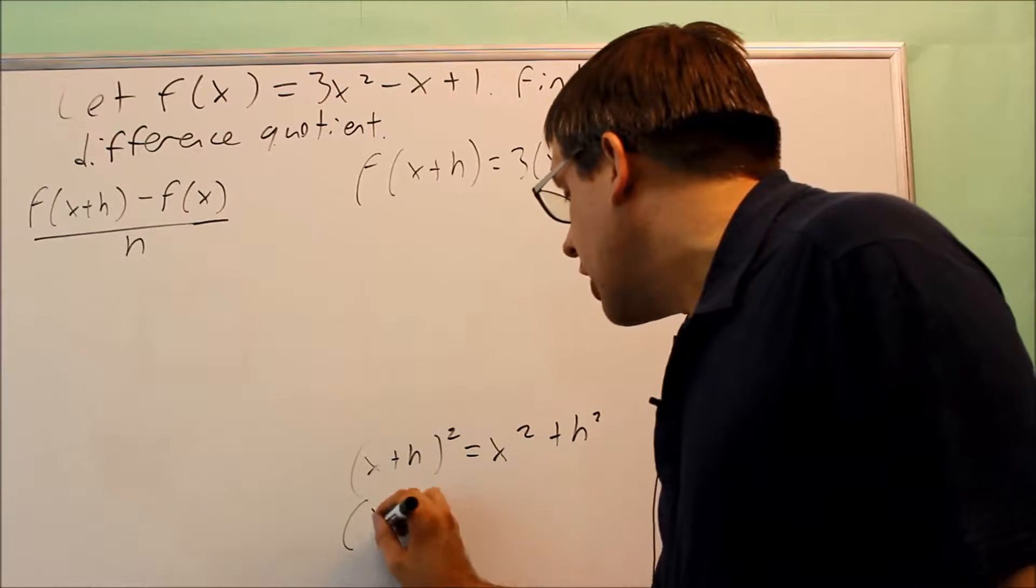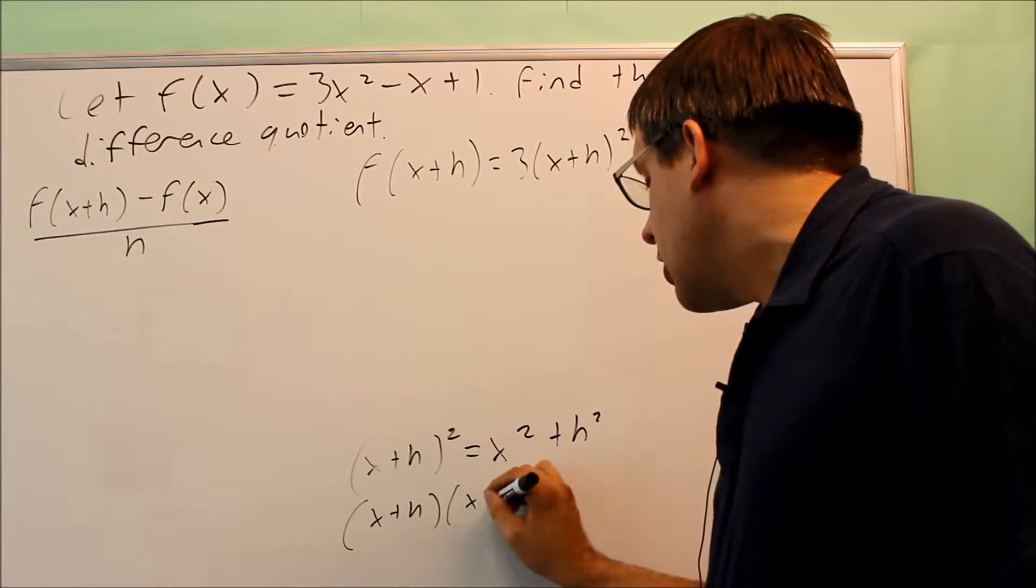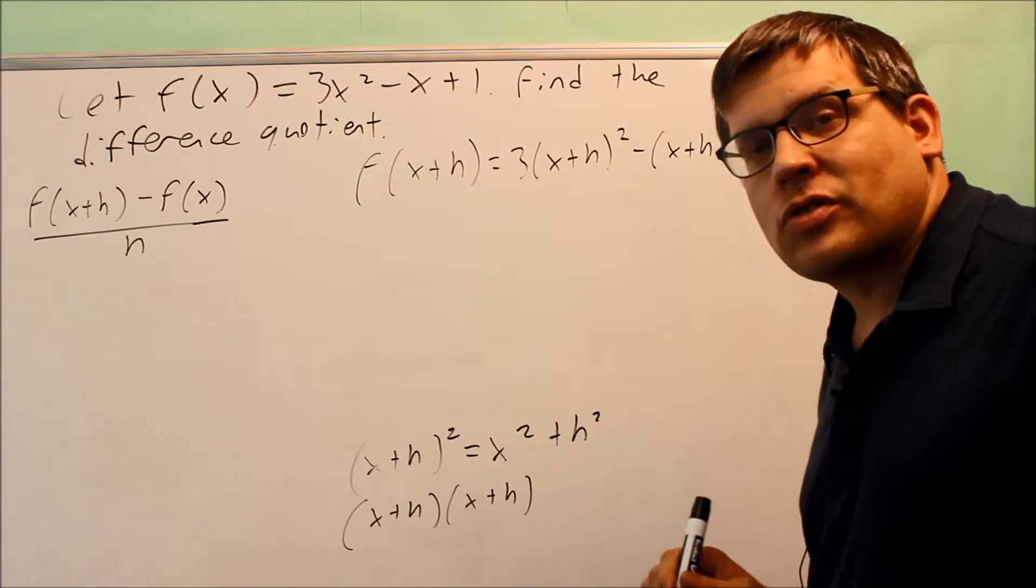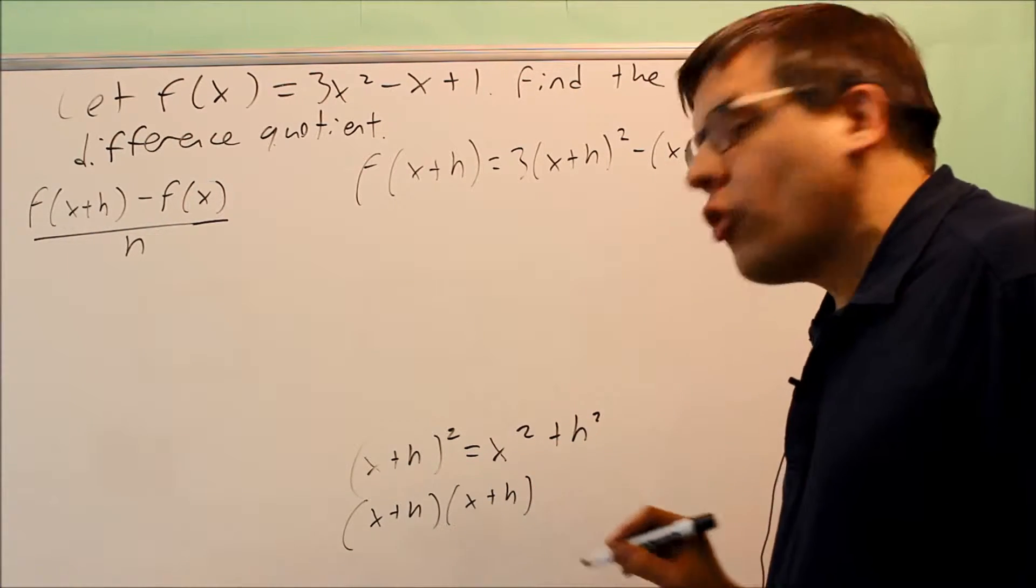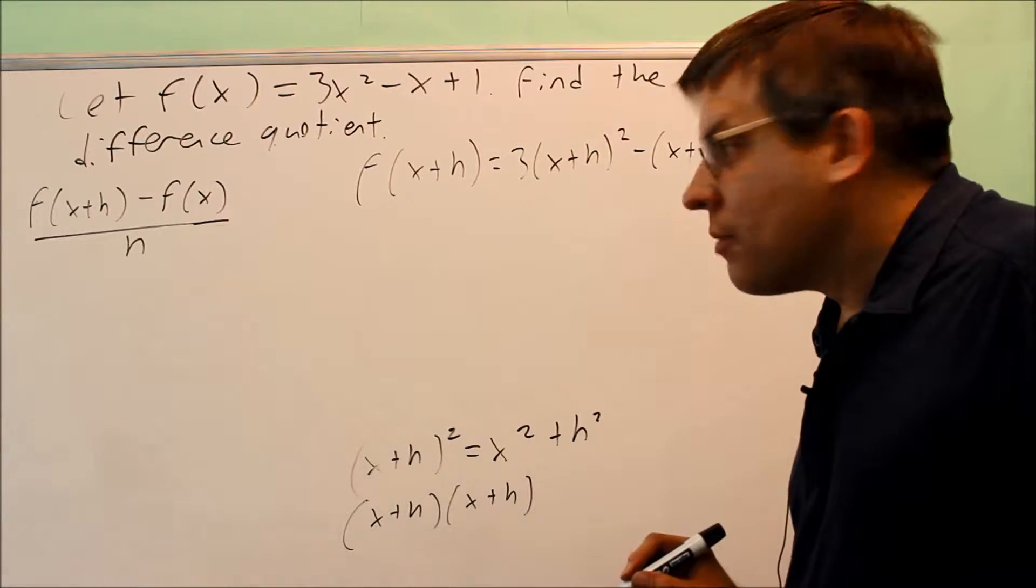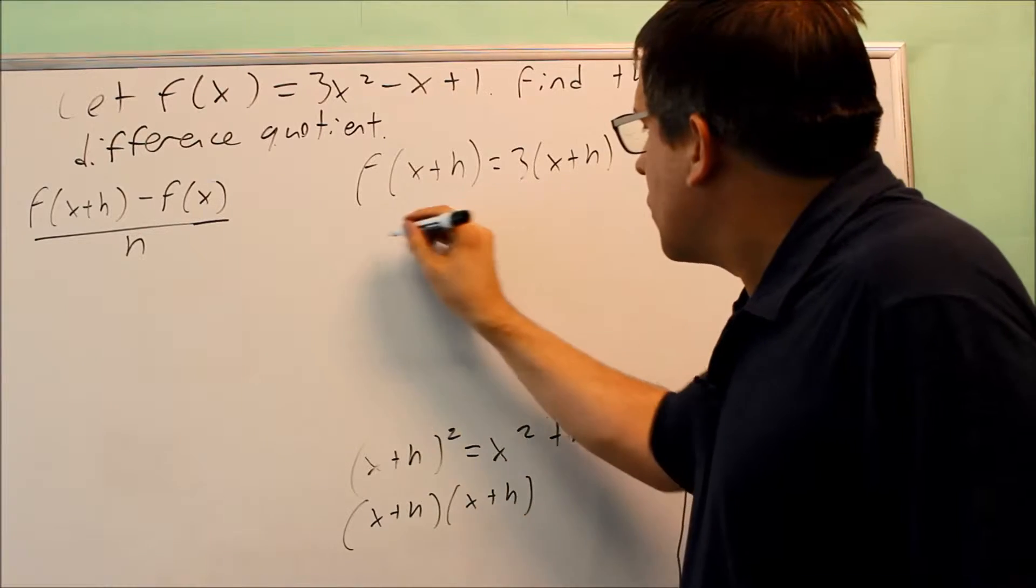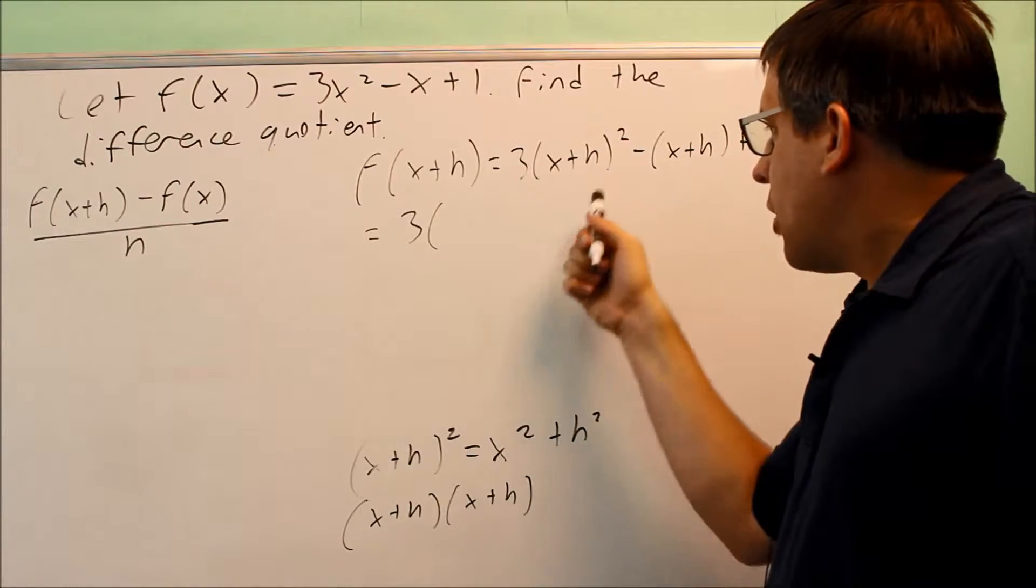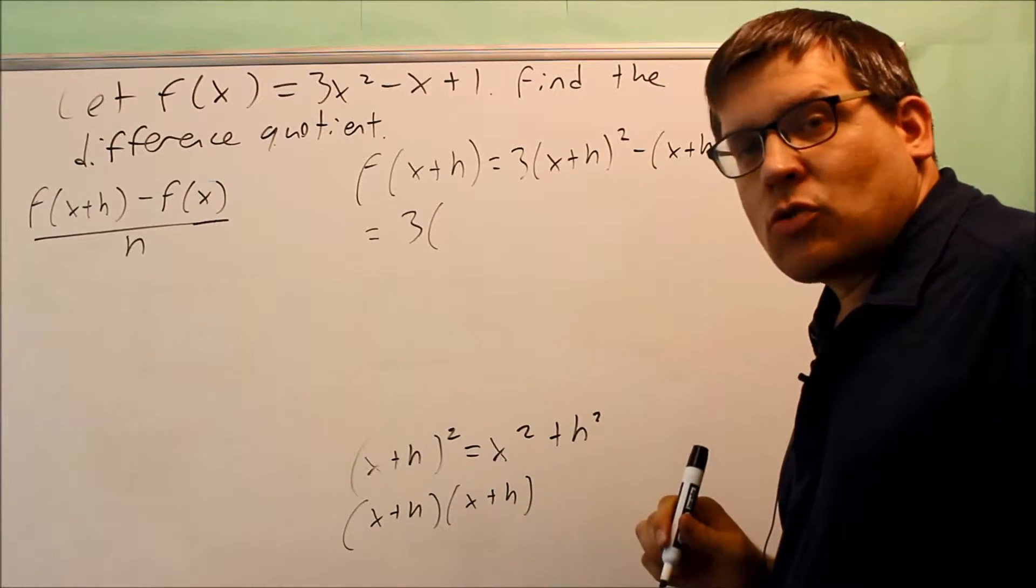The correct way of doing it is that the x plus h squared is really written this way. It's written as x plus h times x plus h. So you want to do a FOIL process on that one.